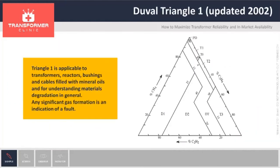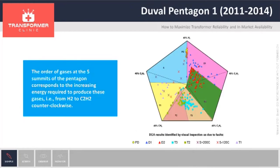Triangle 1 uses methane CH4, ethylene C2H4, and acetylene C2H2. Triangle 1 is useful to distinguish between the six basic types of electrical and thermal faults. Pentagon 1 is also able to identify the six basic types of faults, plus stray gassing of oil S.